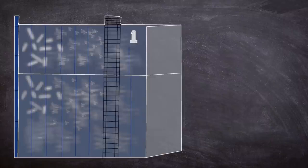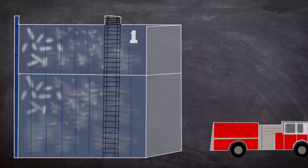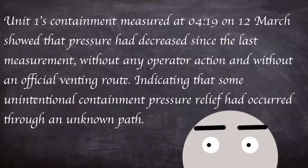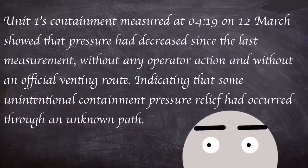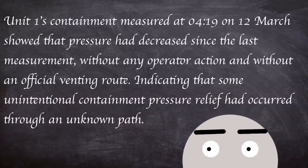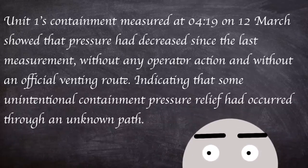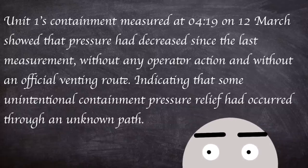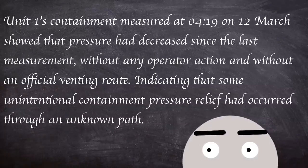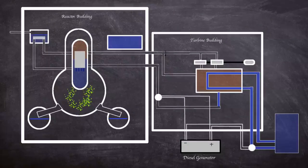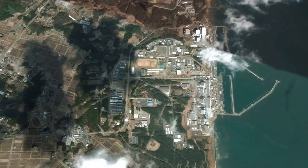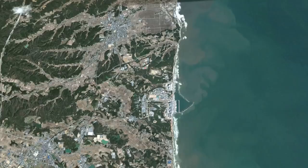At 4 am an alternate cooling system was put into operation, using firetrucks pumping seawater into unit 1 as the vessel pressure had reduced. Unit 1's containment measurement at 4:19 am on the 12th of march showed that pressure had decreased since the last measurement, without any operator action and without an official venting route, indicating that some unintentional containment pressure relief had occurred through an unknown path. This coupled with an increase in radiation levels hinted at reactor vessel damage. Because of this, the government extended the evacuation zone to 10 kilometers.